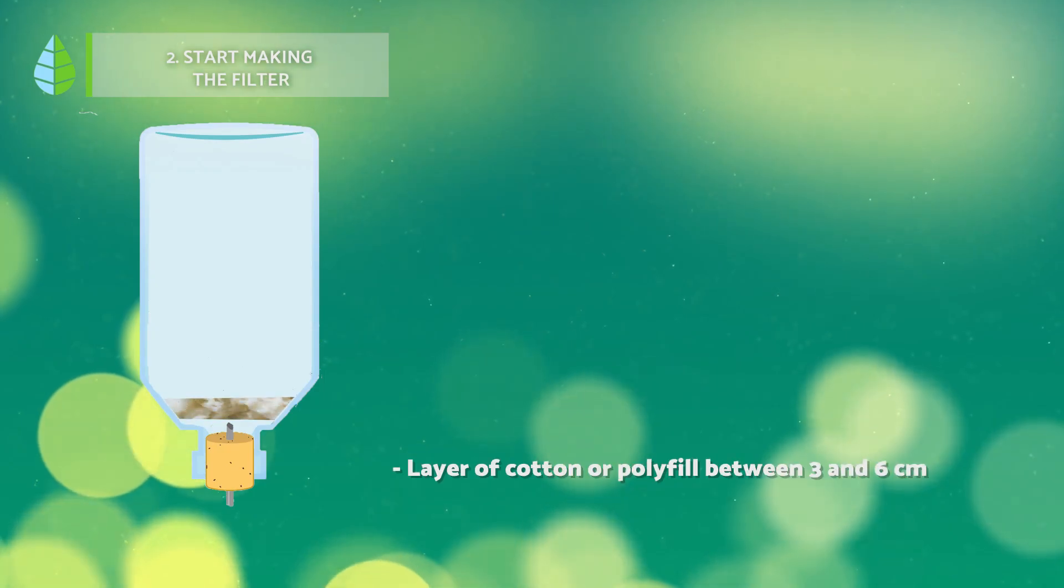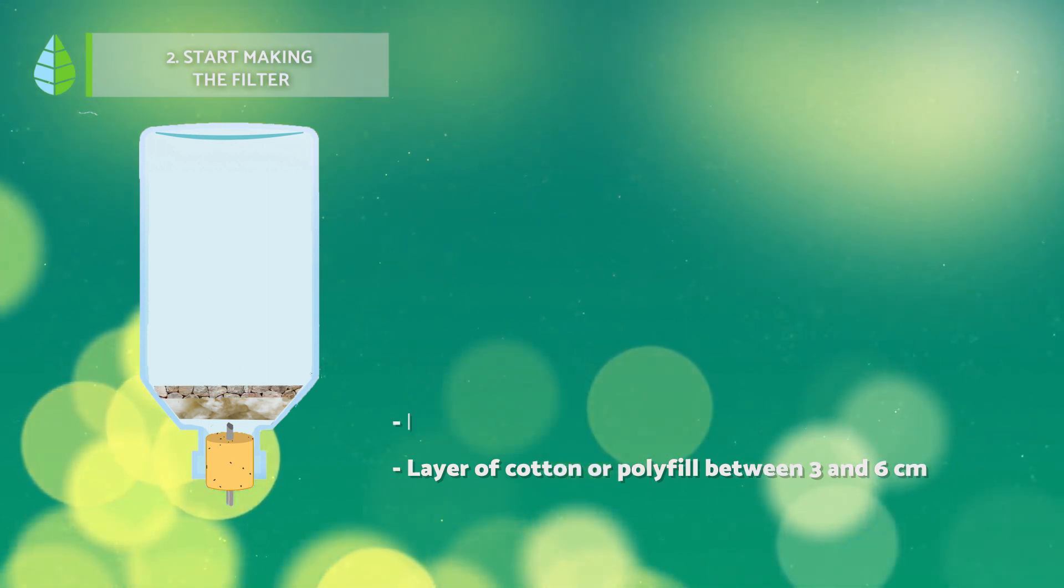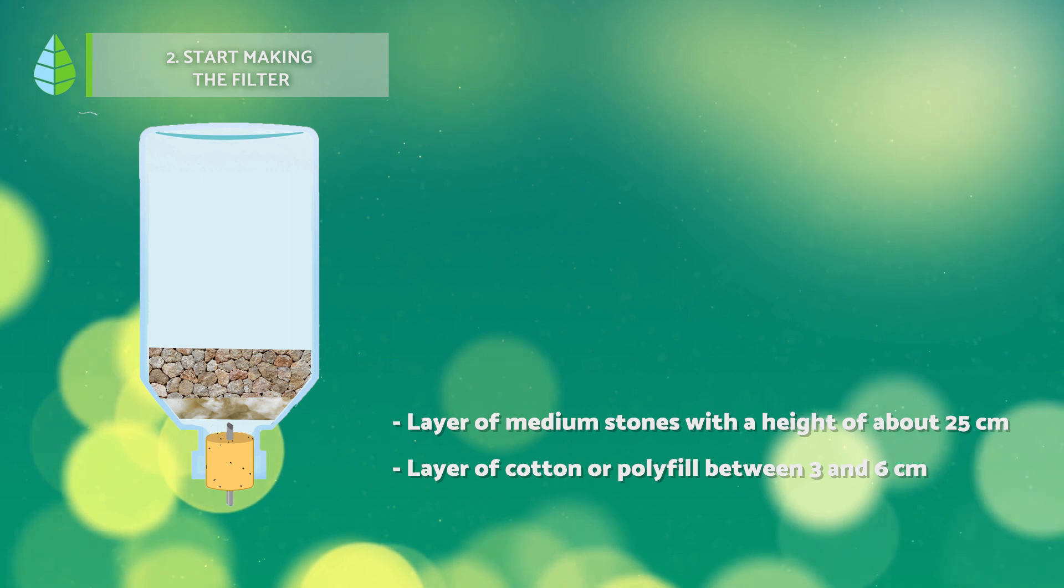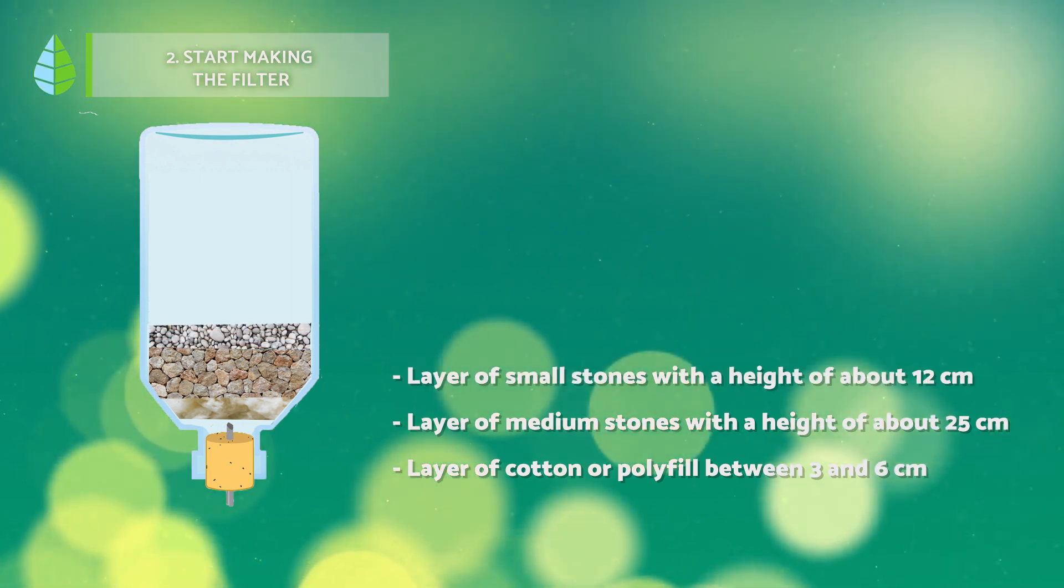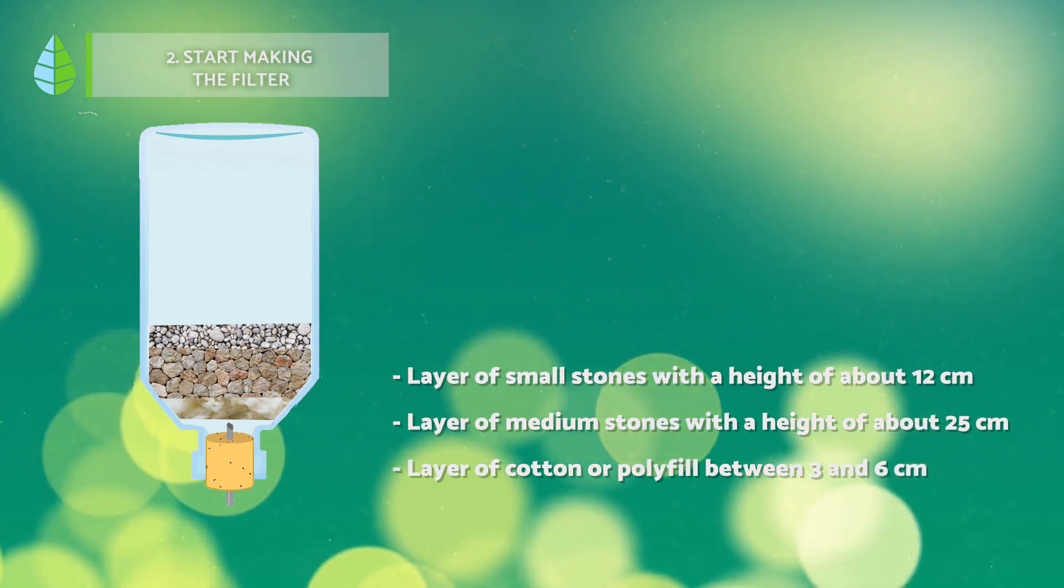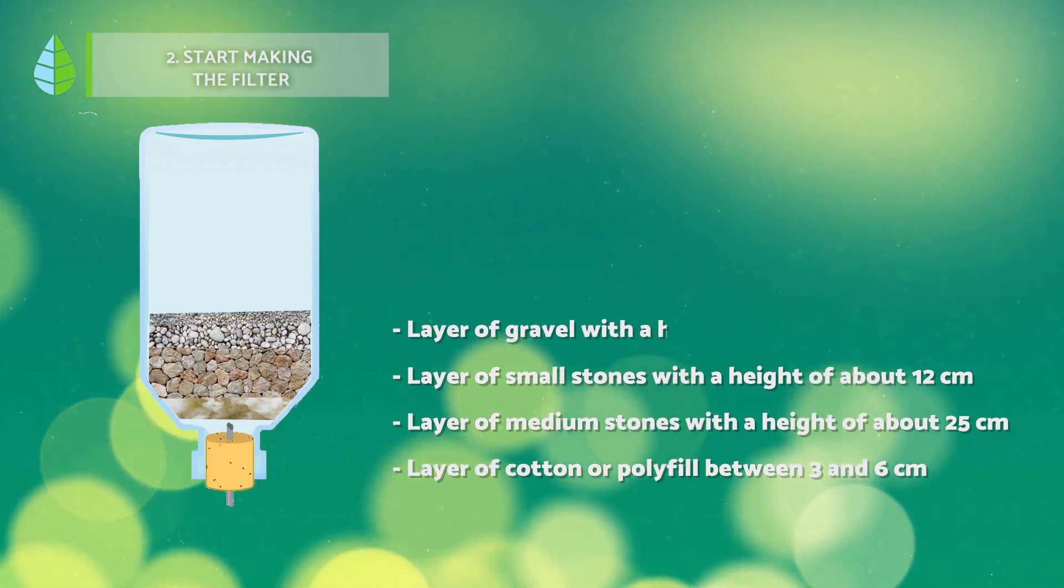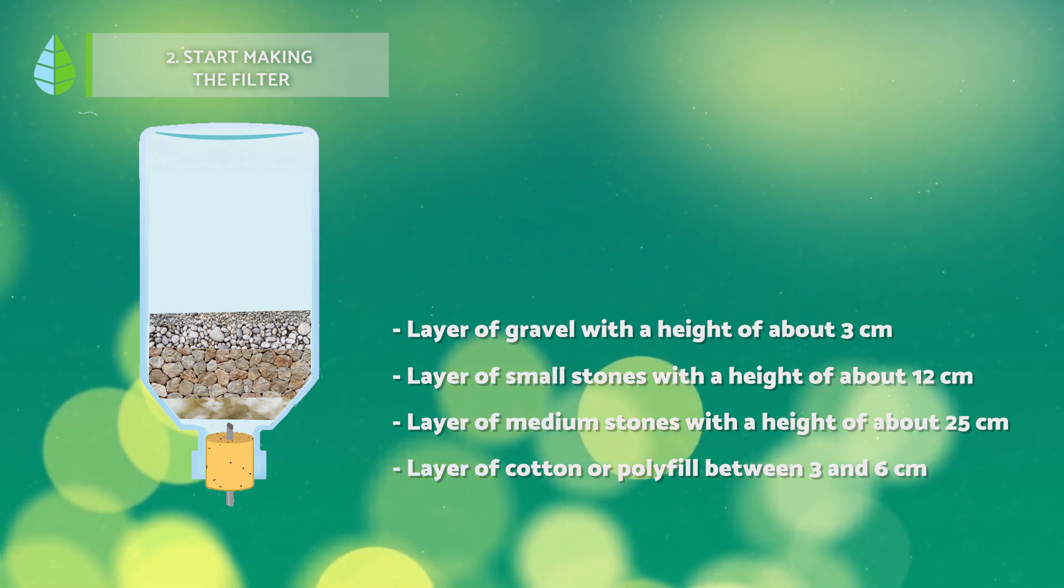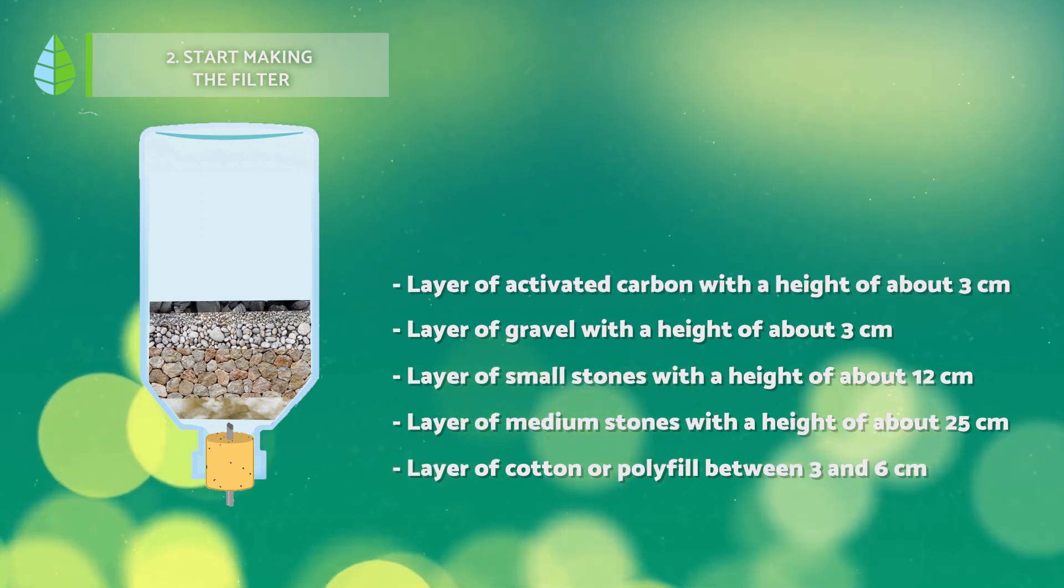A layer of cotton or polyfill between three and six centimeters. A layer of medium stones with a height of about 25 centimeters. A layer of small stones with a height of about 12 centimeters. A layer of gravel with a height of about 2 centimeters. A layer of activated carbon with a height of 3 centimeters.